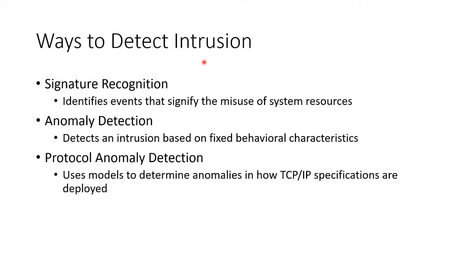How do we detect intrusions? There are three basic ways. We look for known malicious traffic patterns — known signatures — just like how an antivirus works. We identify patterns that match a known database signifying the misuse of system resources. Or we do anomaly detection, where we take a baseline for two weeks of what is considered normal network traffic, and then see if our traffic deviates from that, which sets off an alert.